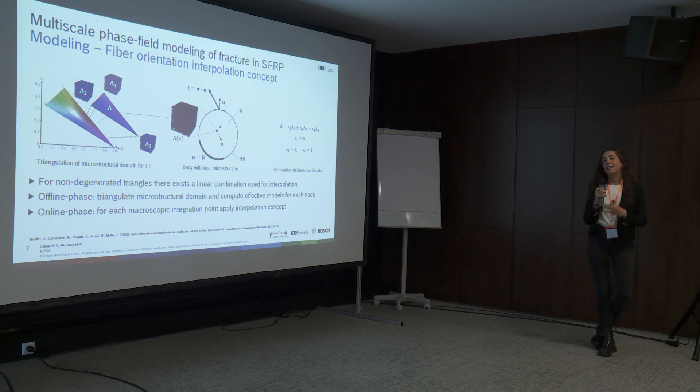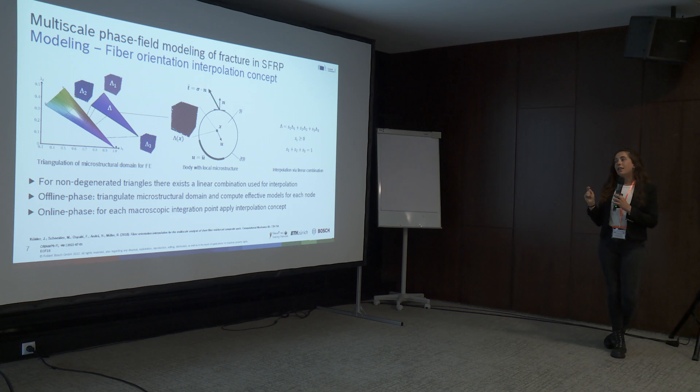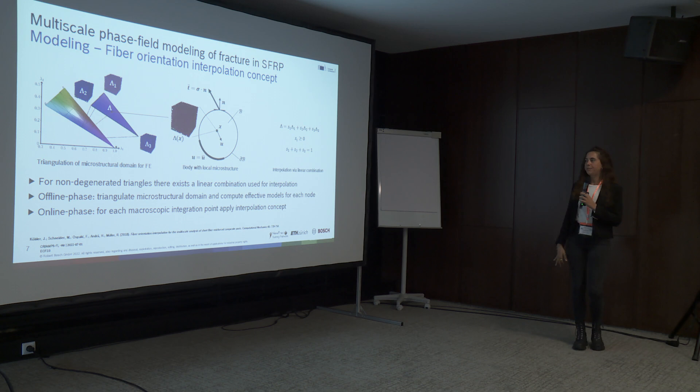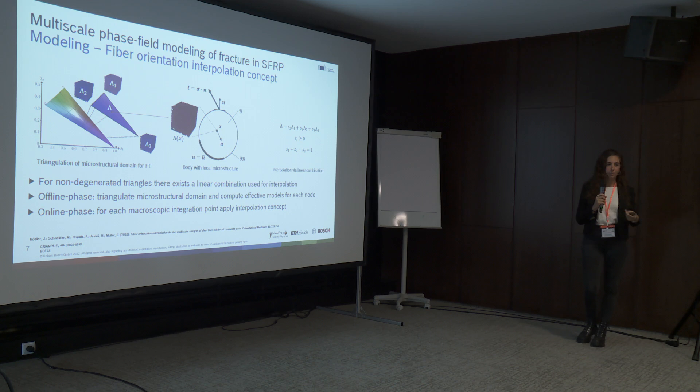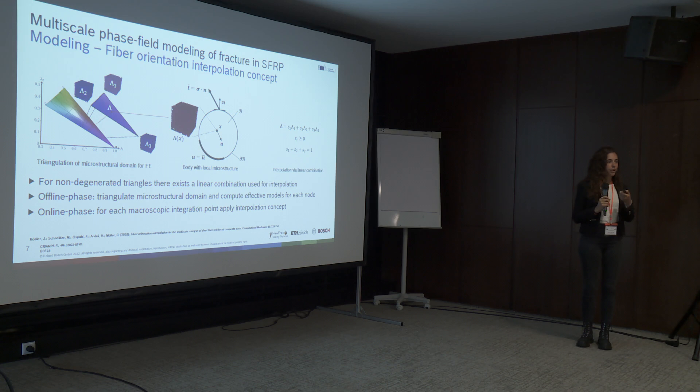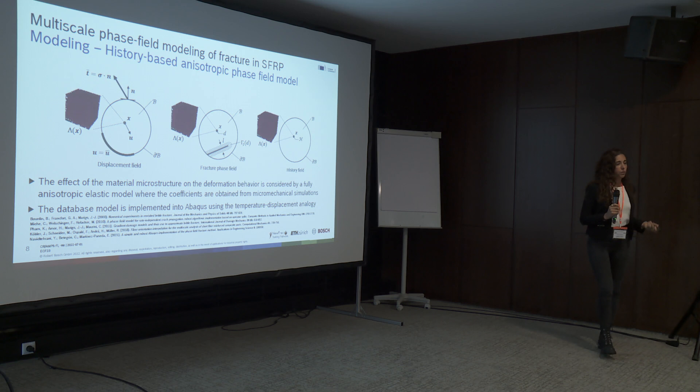The mechanically characterized microstructures are linked to certain nodes of the big triangle, making smaller triangles out of it. The real microstructure is located in a small triangle within the big one, and the constitutive response is obtained by linear combination of the mechanical responses at the three nodes of that triangle. This is the key concept of fiber orientation interpolation — it has an offline phase for creating microstructures and an online phase for computing the real response.